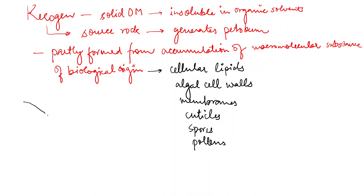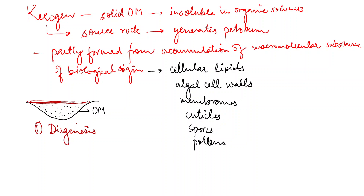Once the organic matter gets buried in a basin or depression, it has to undergo three processes which lead to its evolution and cause the formation of kerogen. The first one is diagenesis, the second is catagenesis, and the third is metagenesis.